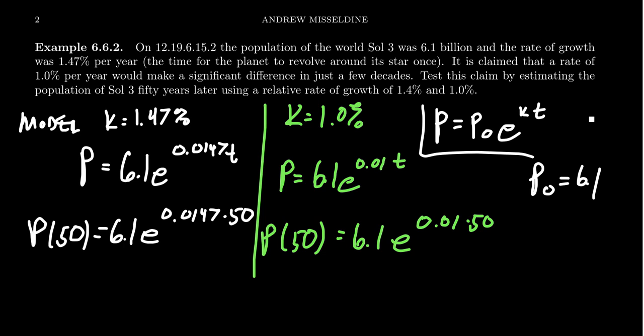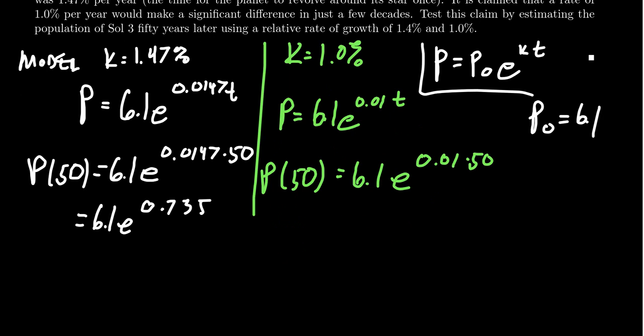So we've got to take 50 times the 1.47%. That's going to give us 6.1 times E. We're going to have to use a calculator eventually. You don't have to be a hero. So when you multiply that with the exponent, you're going to get 0.735. You raise E to that exponent, 0.735. You're going to get 6.1 times 2.085, which when you times that by 6.1, you're going to get 12.7. And so this is going to be the population of Sol 3 would be approximately 12.7 billion people 50 years from the current start date.